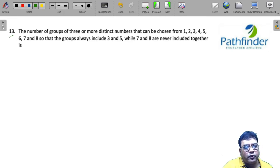The number of groups of three or more distinct numbers that can be chosen from 1, 2, 3, 4, 5, 6, 7, 8, so that the groups always include 3 and 5 while 7 and 8 are never included together.